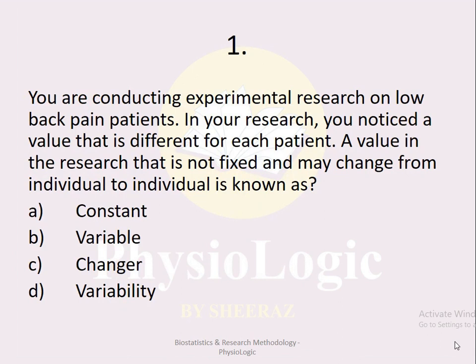MCQ number one: You are conducting experimental research on low back pain patients and noticed a value that is different for each patient. A value in the research that is not fixed and may change from individual to individual is known as: option a constant, option b variable, option c changes, option d variability. The correct option is variable — anything that is not fixed and may change from individual to individual is known as a variable.